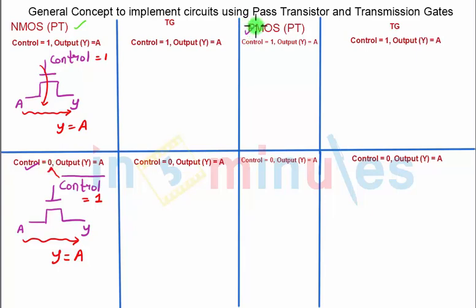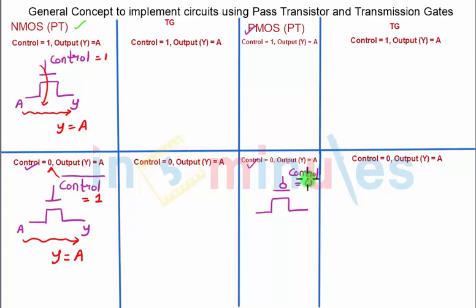For a PMOS pass transistor: we want output Y equal to A when control is 1, and also the case when control is 0. The key thing to remember is a PMOS transistor turns on when a 0 is applied at its gate. Let's do the easier case first — give the gate terminal the control signal directly. When my control is 0, this PMOS acts like a closed switch, input A passes to output Y, and Y equals A.